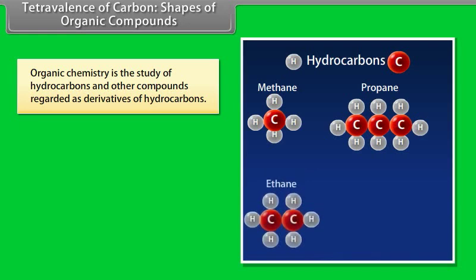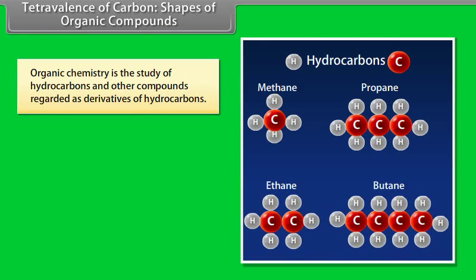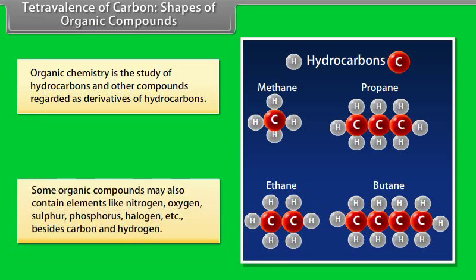Organic chemistry is the study of hydrocarbons and other compounds regarded as derivatives of hydrocarbons. Some organic compounds may also contain elements like nitrogen, oxygen, sulfur, phosphorus, halogen, etc., besides carbon and hydrogen.